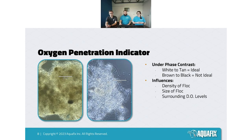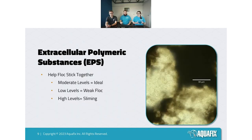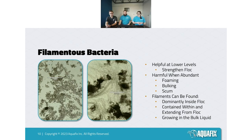Within floc, we also look at EPS levels. EPS is important because it helps hold floc together, but you don't want too high or too low levels — you want a nice moderate level. If EPS levels are too low, your floc can start to break apart because they're weak. However, if you have high levels, that can actually lead to sliming.